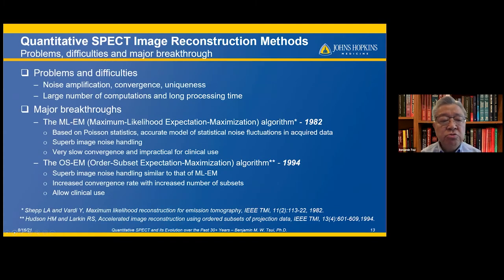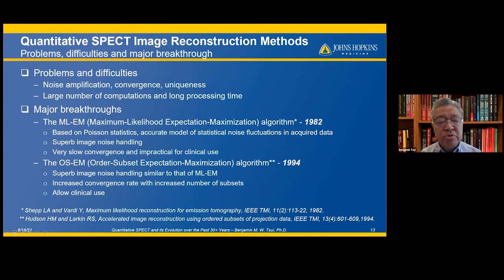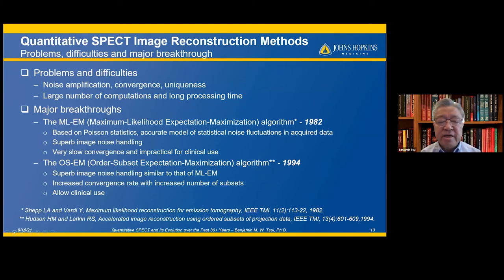There are two major breakthroughs that made quantitative SPECT image reconstruction practical. The first is the 1982 development of the ML-EM algorithm, based on Poisson statistics, which accurately models noise fluctuation in the acquired data. It has superb image noise handling but very slow convergence, making it impractical for clinical use. The second breakthrough is the 1992 development of the OS-EM algorithm by Hudson and Larkins, which has superb noise handling similar to ML-EM but with increased convergence rate due to subsets, allowing clinical use.